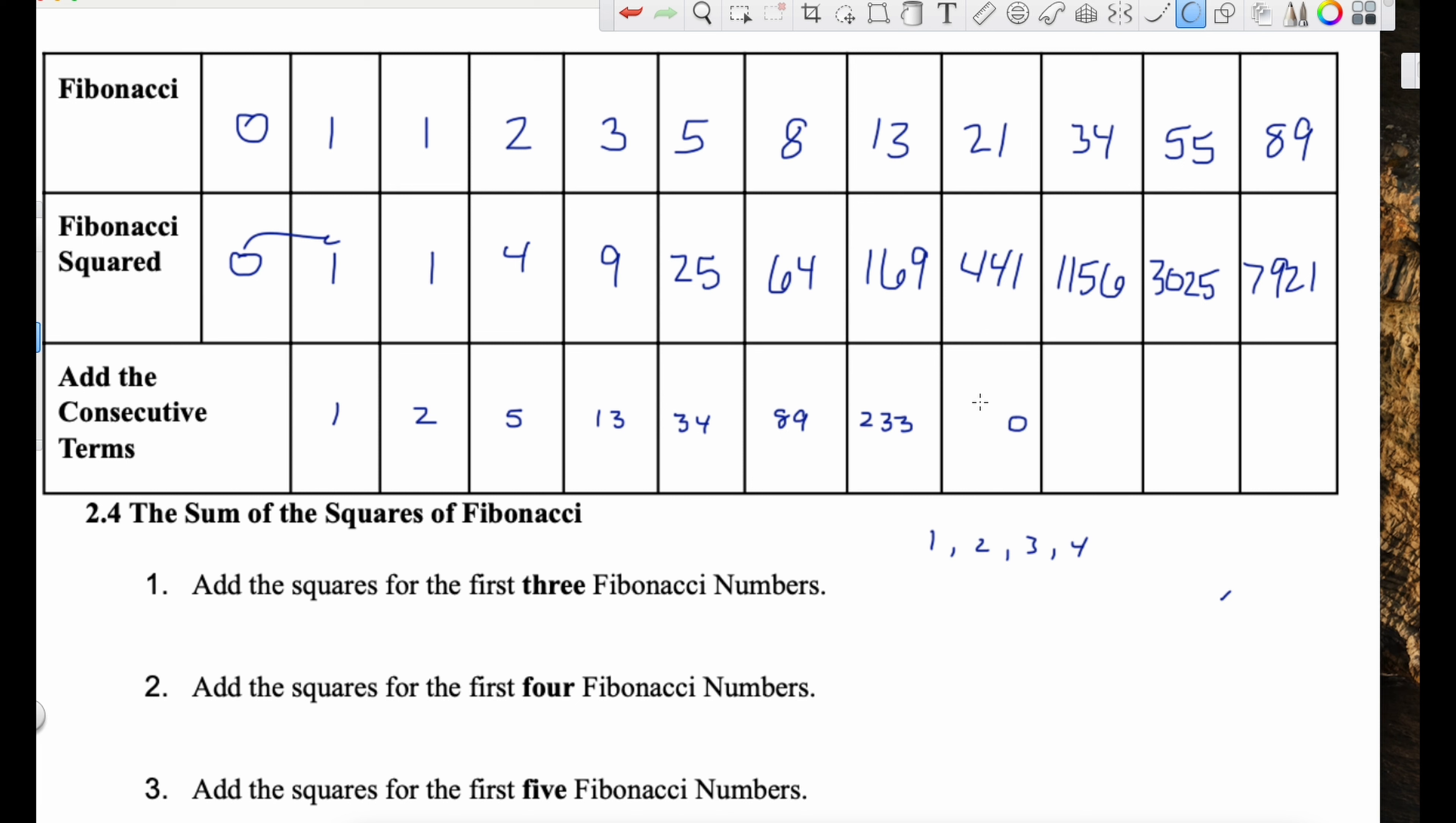So the trick here or the pattern that we see is if we were to continue and add the next eight Fibonacci numbers, we would expect the factors to be following the same pattern as the Fibonacci series suggests. So this next one would be 21. We would expect the next sum to be 21 times 13. That's my prediction.